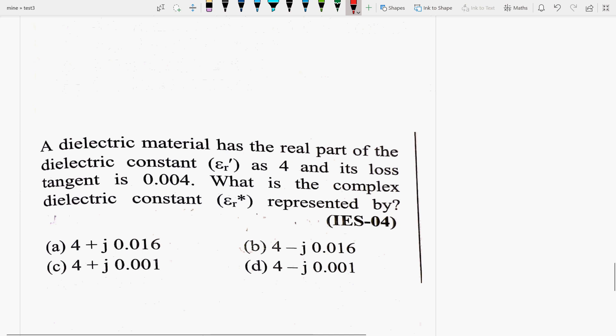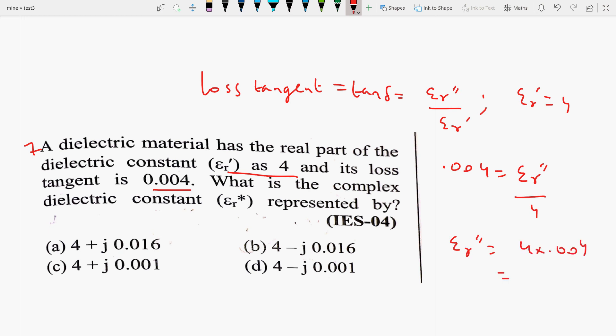Next question hai aapka seventh, a dielectric material has the real part of dielectric constant, this is your real part, and its loss tangent is this much. What is the complex dielectric constant represented by? See, loss tangent joh hota hai, yeh aapne EMFT me hi pada ho ga. This is tan delta is equal to epsilon r double dash by epsilon r dash. This hi ho ga. This case mein aap dekhe, hamaare paas real part kitna diya hai. It is 4.